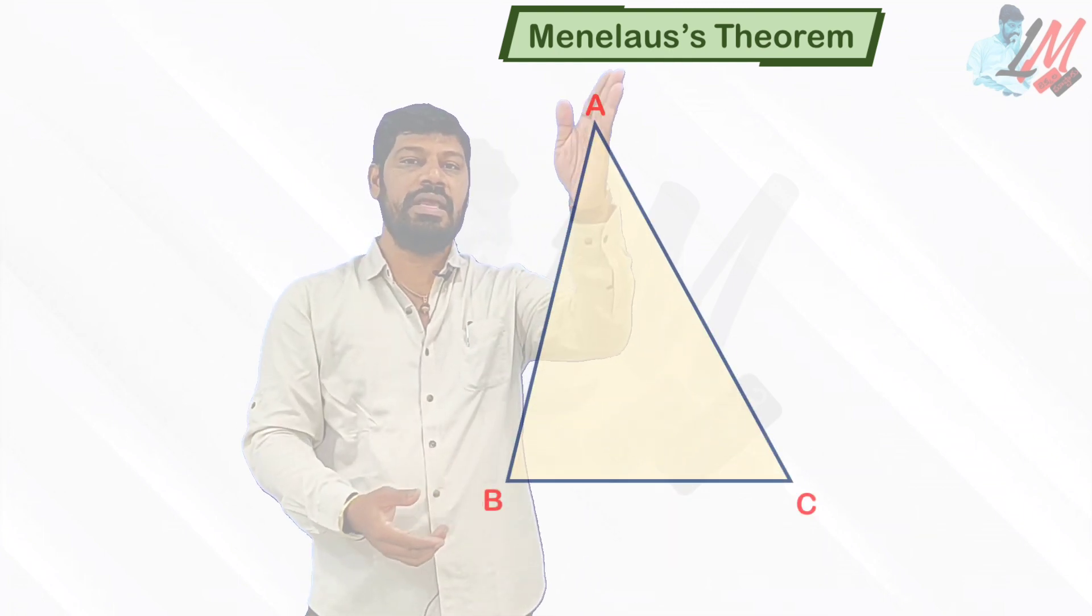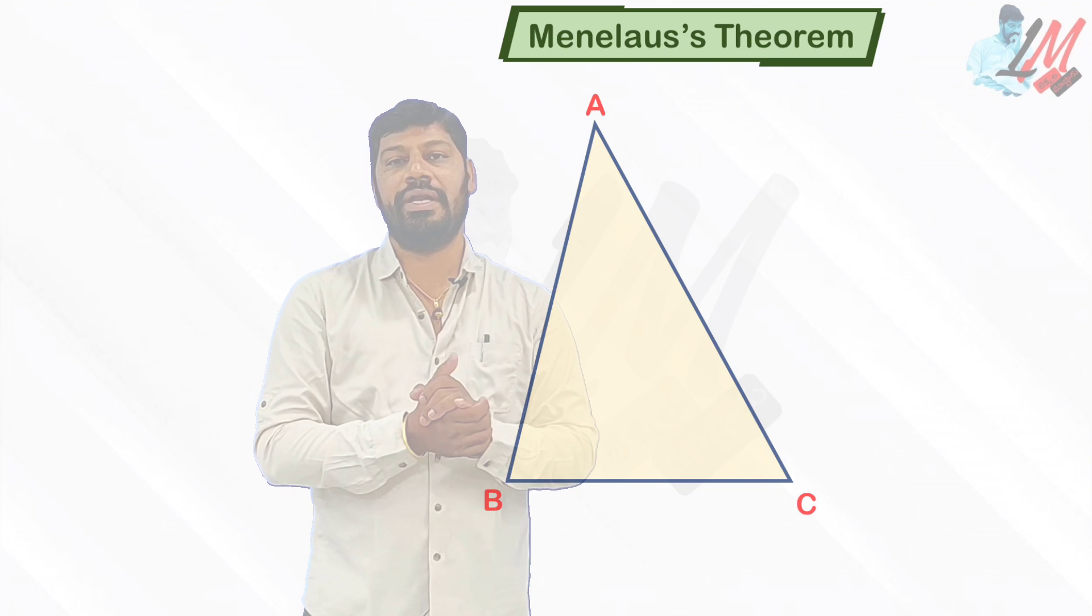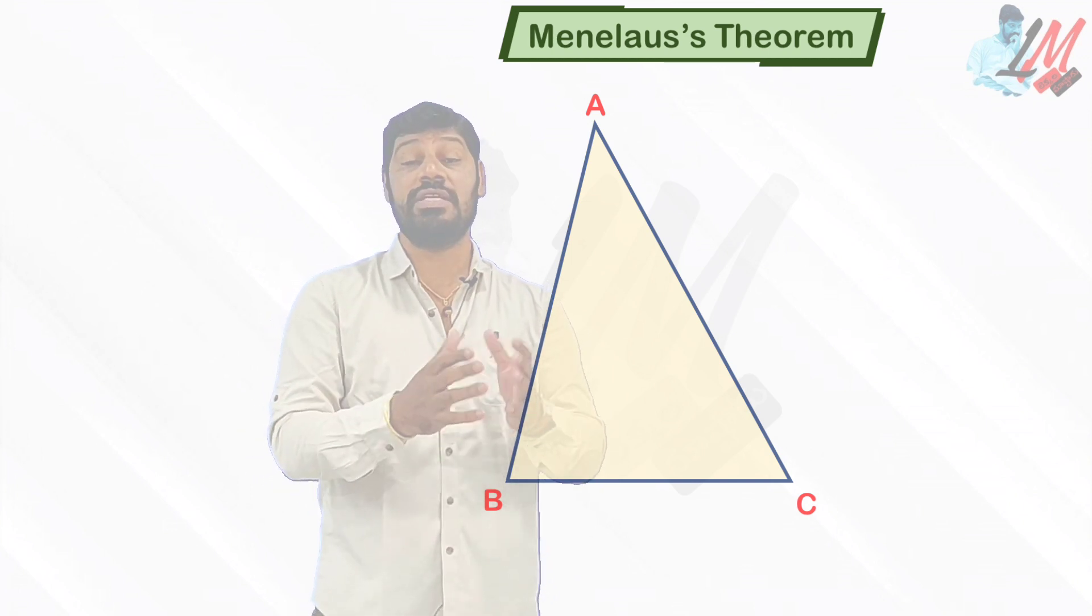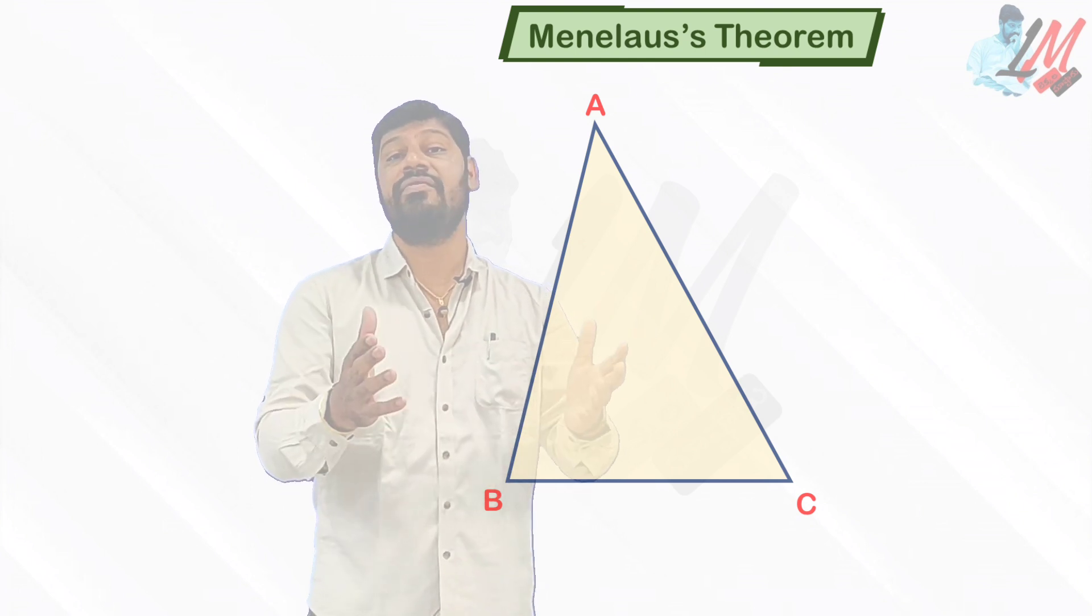Just consider a triangle ABC, any arbitrary triangle. Now for this triangle, if you are able to draw a transversal which divides all the three sides at three different points.